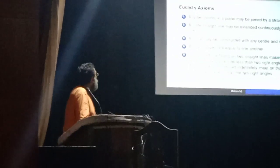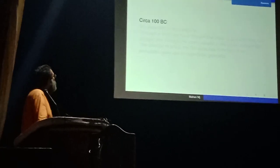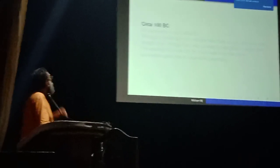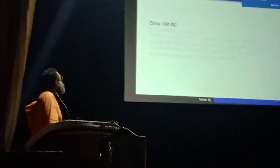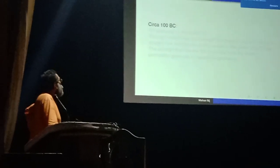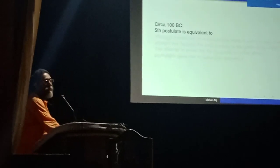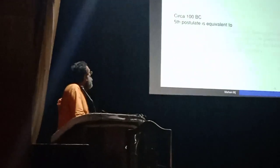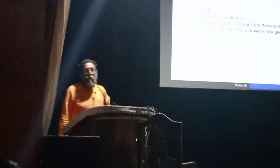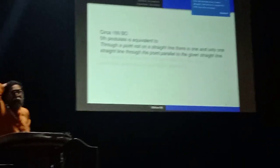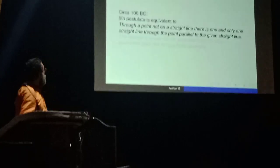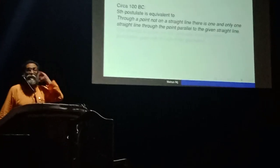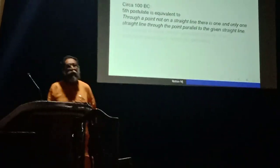The fifth postulate got reformulated and is also called Playfair's axiom. Around 100 BC — about 100 years after Euclid — it was shown that the fifth postulate is equivalent to the following statement, which is the formulation all of us are familiar with: through a point not on a straight line, there is one and only one straight line through the point parallel to the given straight line. So this is the fifth postulate, and it has a different status from the first four axioms.